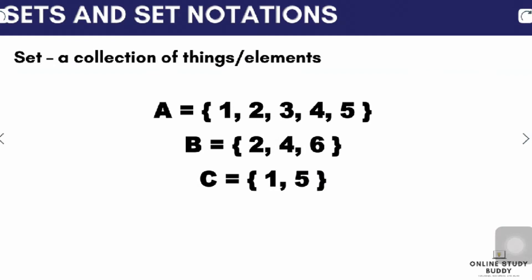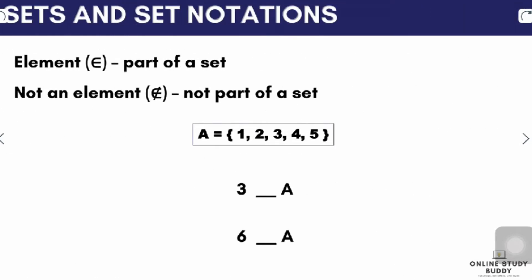First, we will define what a set is. A set is a collection of things or elements. So in our example, we can see three different sets named set A, set B, and set C. The elements of set A are 1, 2, 3, 4, and 5. While the elements of set B are 2, 4, and 6. The elements of set C are 1 and 5. The contents of a set are called elements, and elements are defined as part of a set.